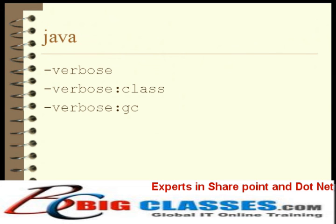This form of the verbose option causes the JVM to report on usage of natively executable methods. The acronym JNI stands for Java Native Interface and deals with the calls from Java to native executable code.